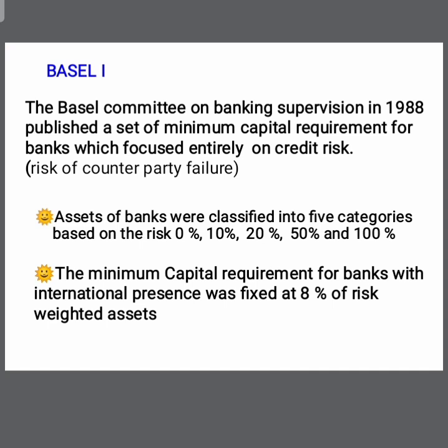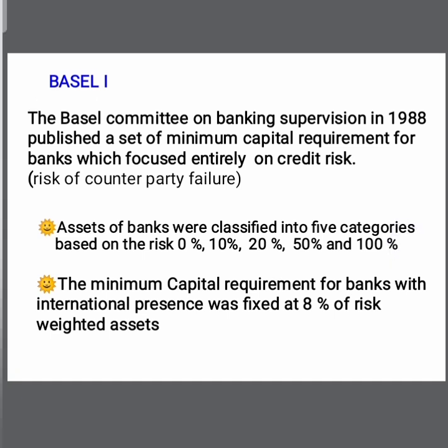Credit risk is the risk of counterparty failure — if you have a debtor, you will have to bear the risk of that counterparty failing to pay. Assets of banks were classified into 5 categories based on risk: 0%, 10%, 20%, 50%, and 100%.